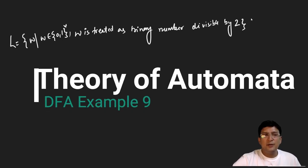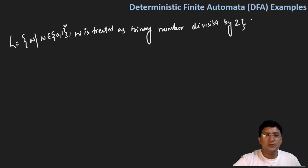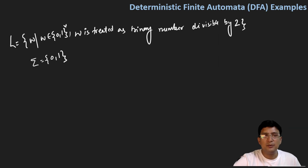Hello everyone, we will continue our discussion on the DFA. Let's say there is a language which has zero and one in the alphabet set. This means we are looking at binary numbers, and we want to see which binary numbers are divisible by two.